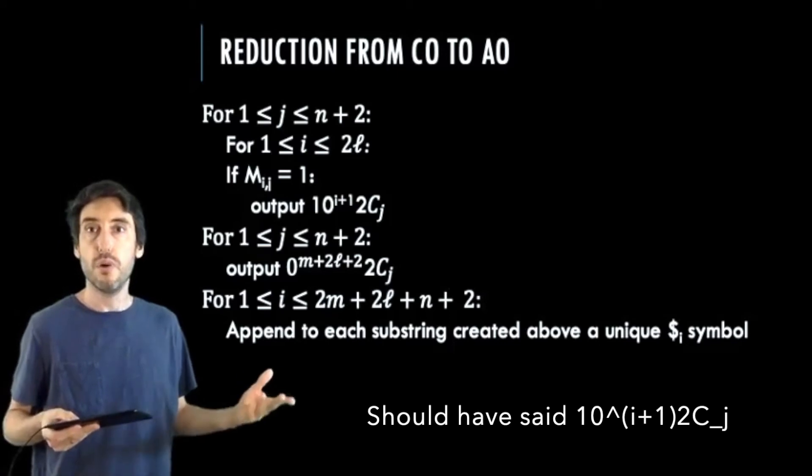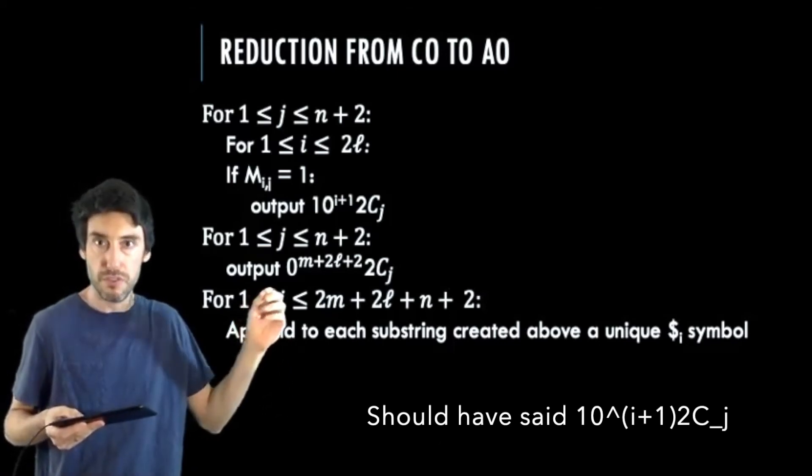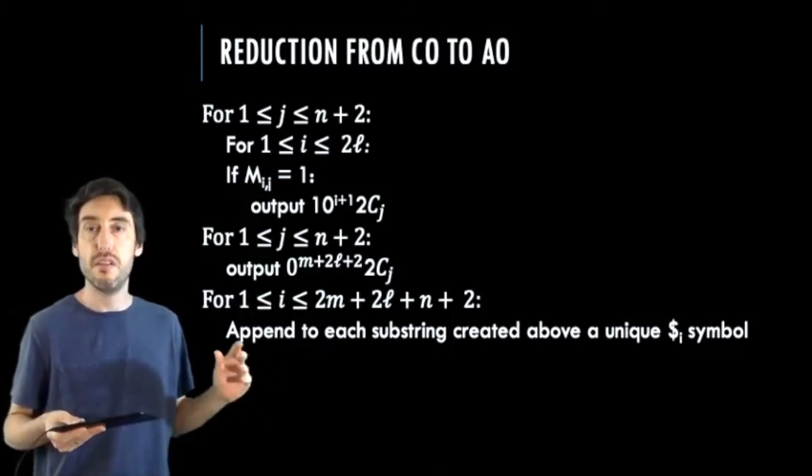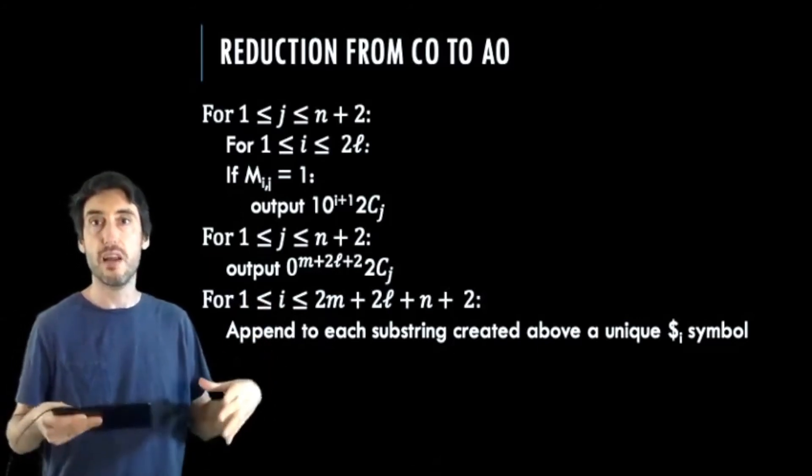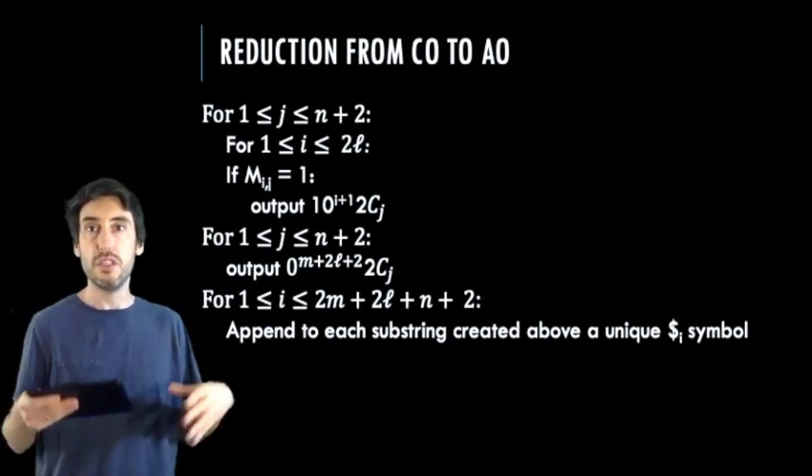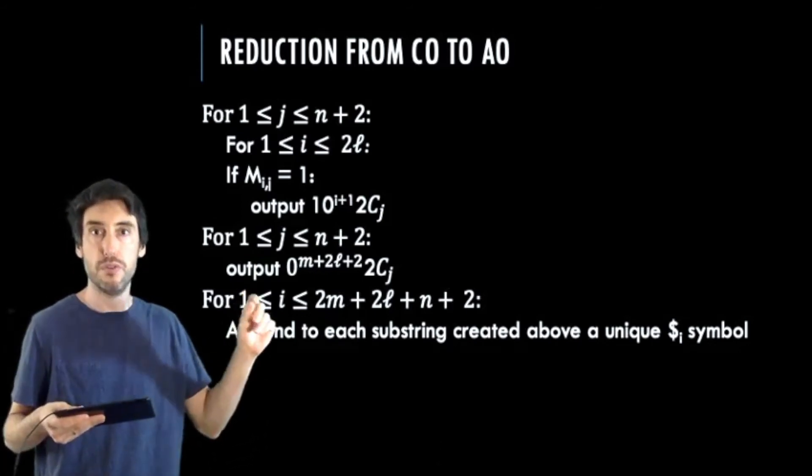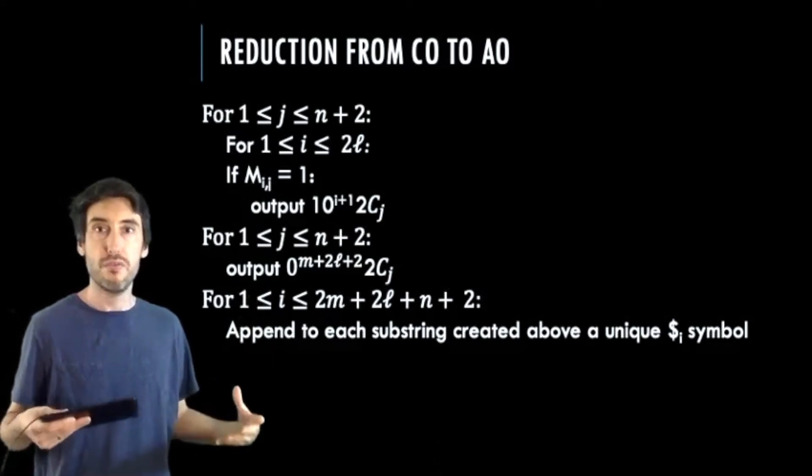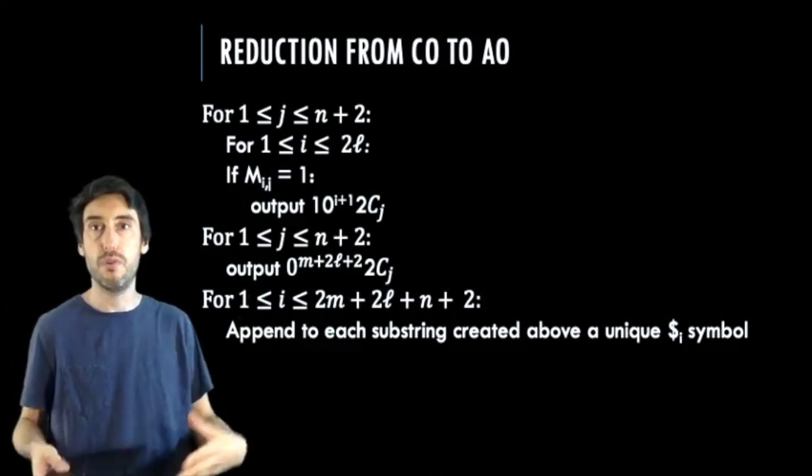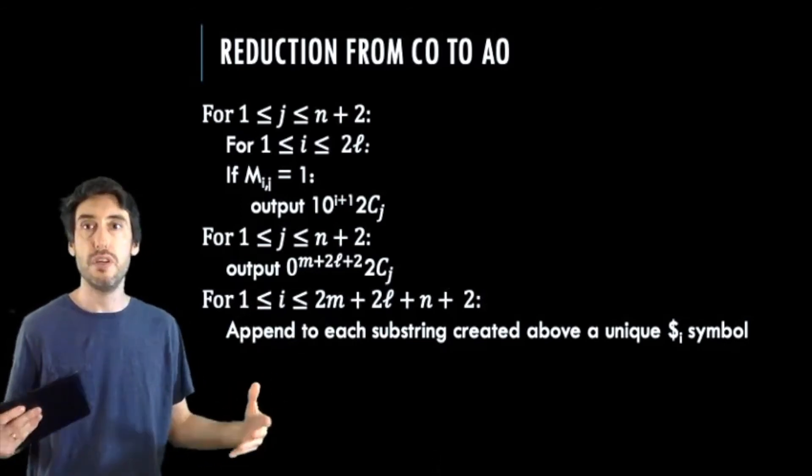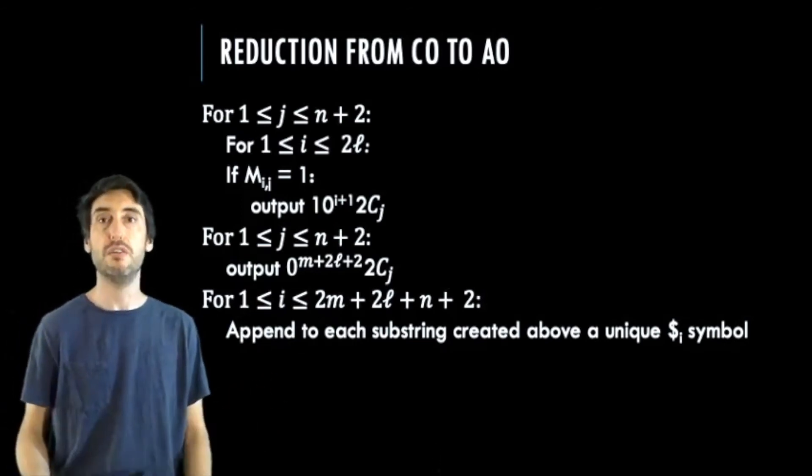So here's the idea of how we construct such a string. We're going to iterate through the matrix, and every one we encounter, we're going to output a string 1 to the 0 to the i plus 2 to cj, where i indicates the row, and cj is a symbol associated with that column. Then for each column, we're going to output another string, 0 to the m plus 2 l plus 2 to cj, which has two more zeros than the number of rows. Then we append each string created above with a unique dollar symbol, and concatenate all these strings together.